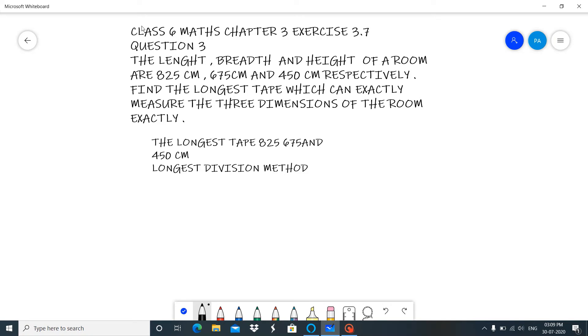Welcome back to my channel Cracking Solution and in this video I am going to teach you Class 6 Maths Chapter 3 Exercise 3.7 Question 3. The question says as follows: The length, breadth and height of a room are 825 cm, 675 cm and 450 cm respectively.